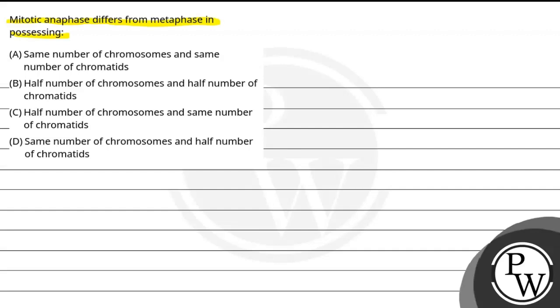First, same number of chromosomes and same number of chromatids. Second, half number of chromosomes and half number of chromatids. Third, half number of chromosomes and same number of chromatids. Fourth, same number of chromosomes and half number of chromatids.